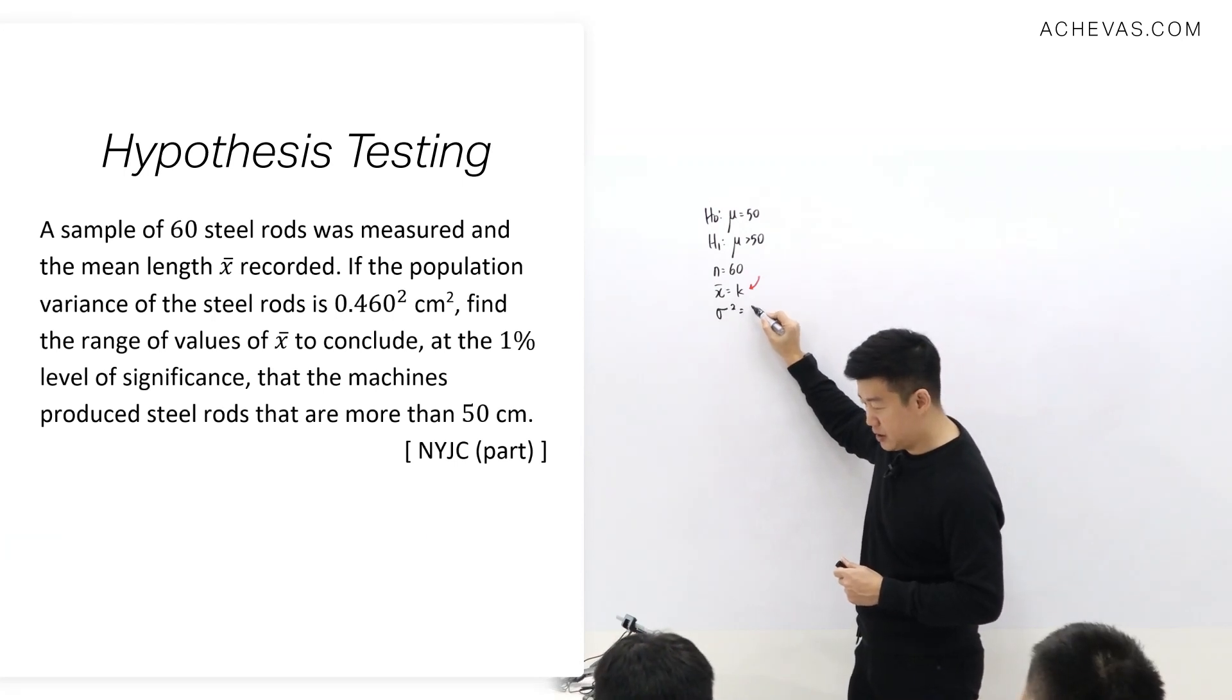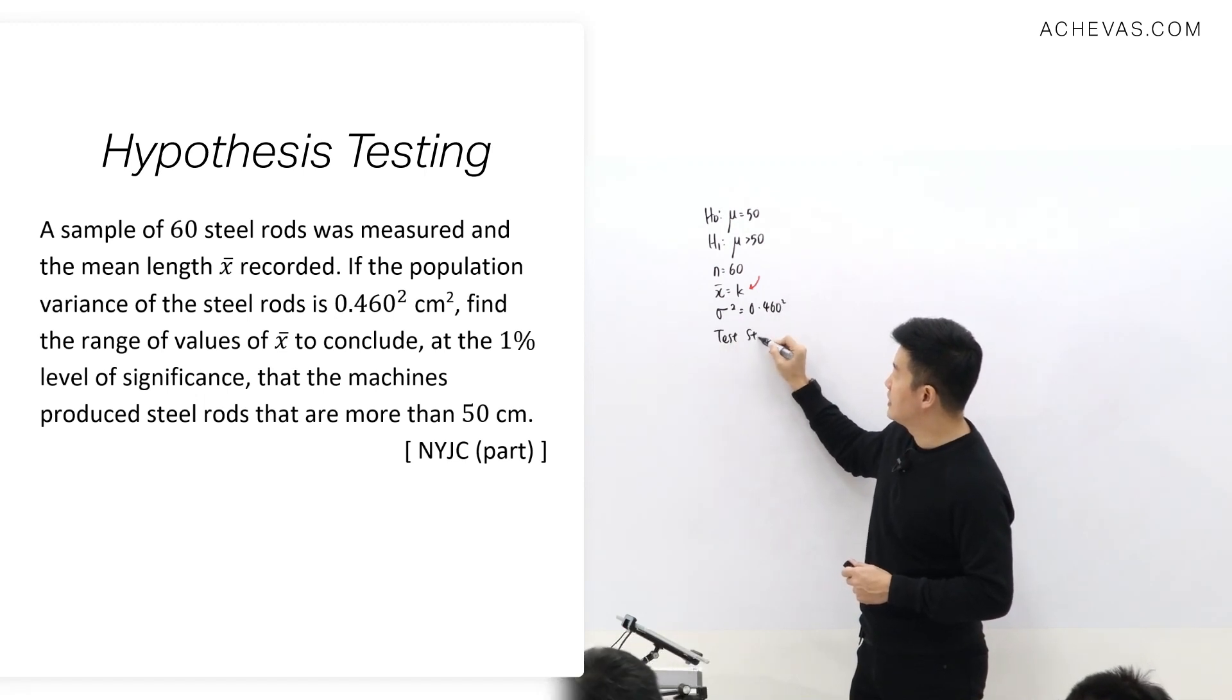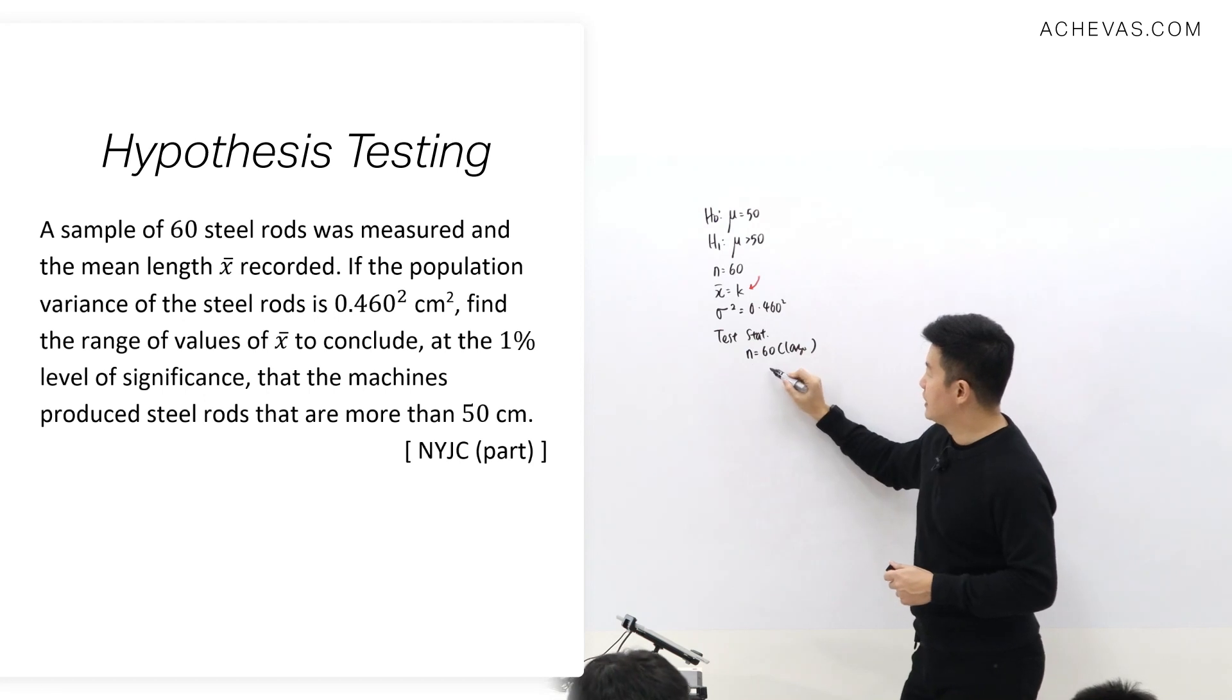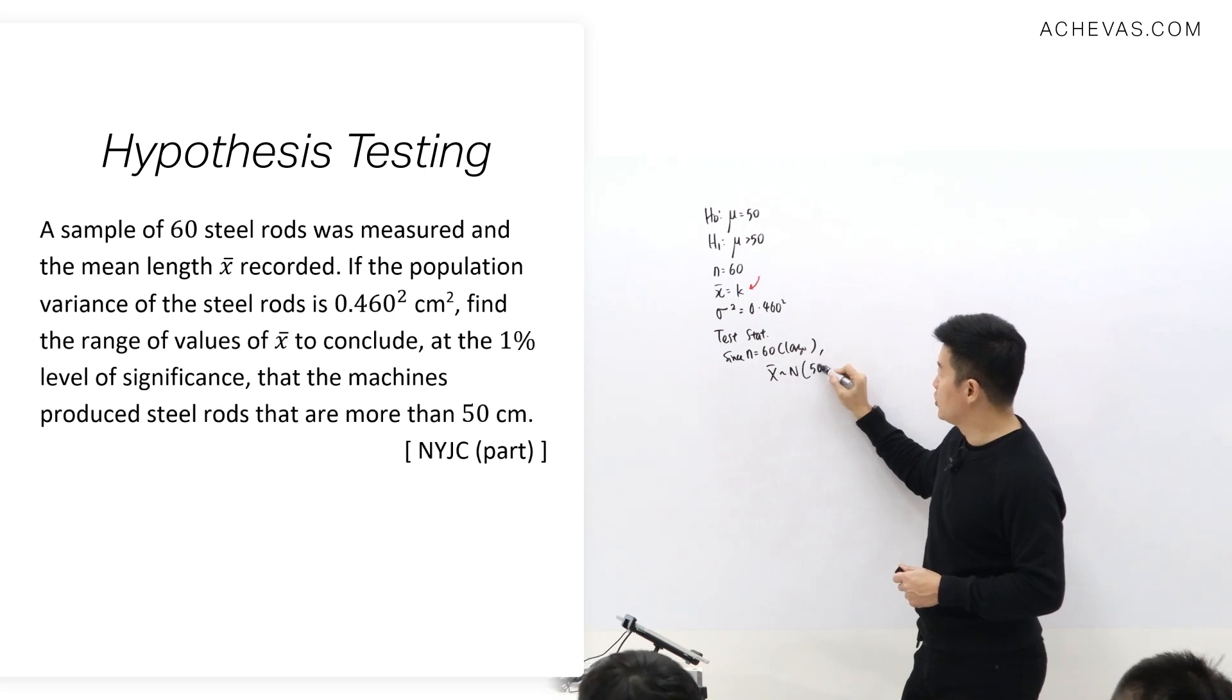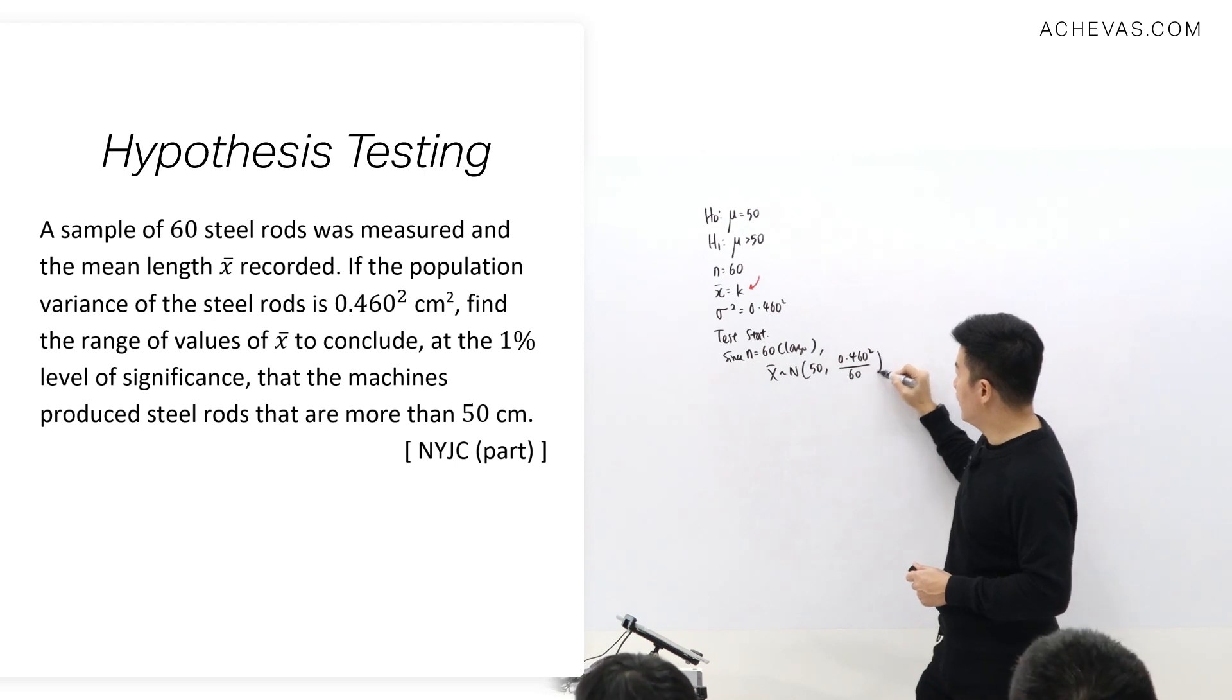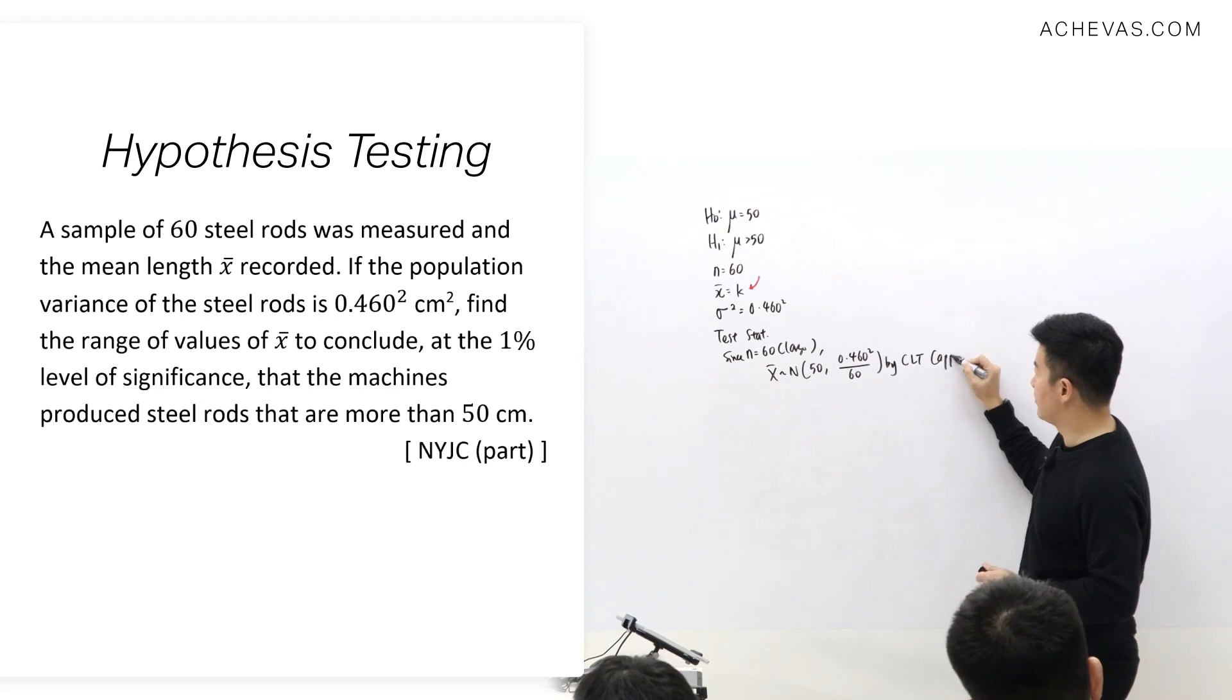This is given to me as 0.460 squared. Which means that my test statistic is n which equals 60. This is large, which means that since this is happening, I can say X-bar follows a normal distribution of 50, 0.460 squared over n by central limit theorem as an approximation.